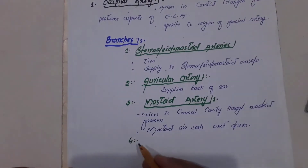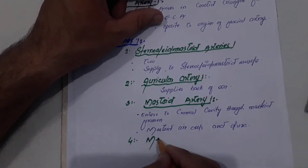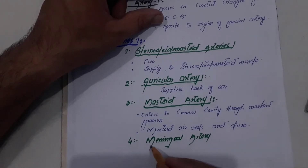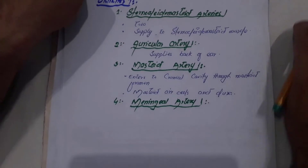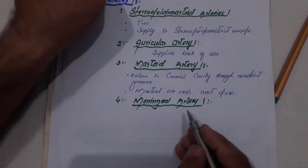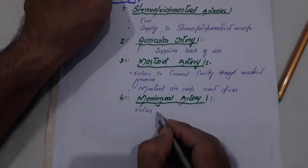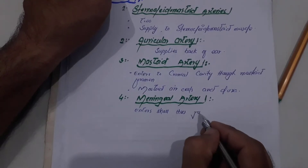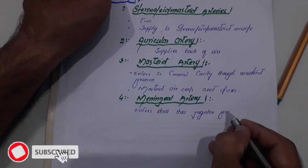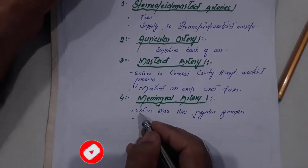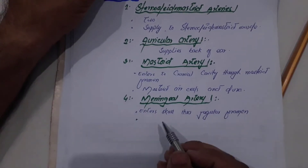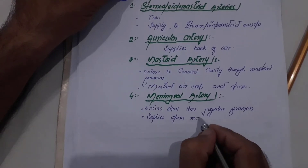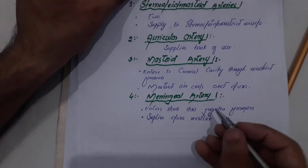The fourth branch which arises from the occipital artery is the meningeal artery. This meningeal artery enters the skull through the jugular foramen, and it supplies the dura mater of the posterior cranial fossa.